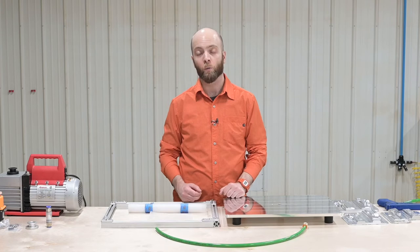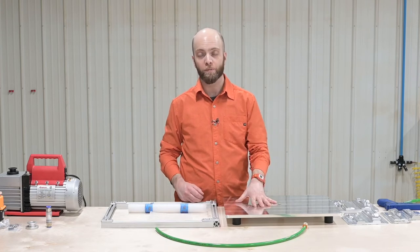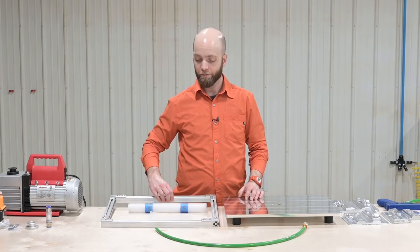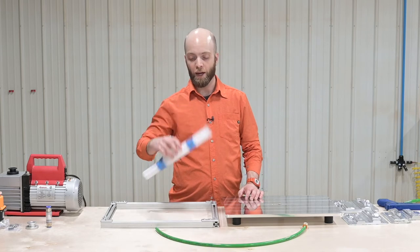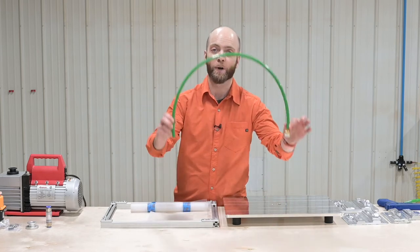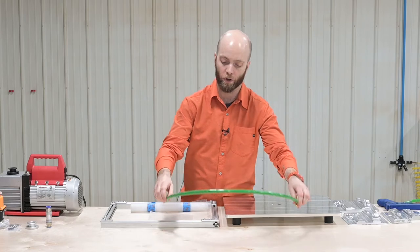If you order the full kit, what you'll get is the machined aluminum deck, the adjustable frame, a roll of breather mesh, and a length of vacuum rated line with a quick connect fitting already installed.